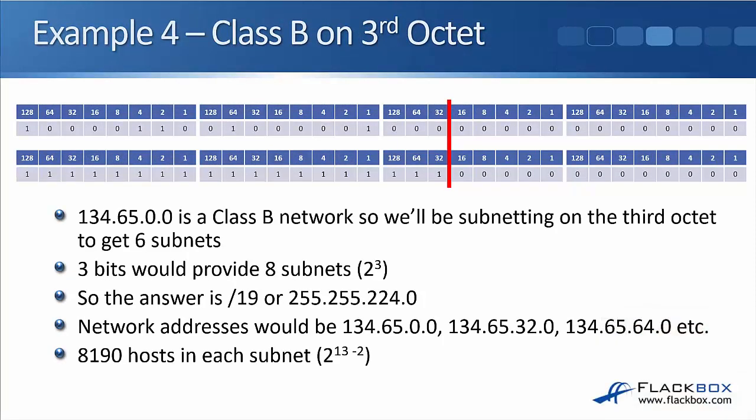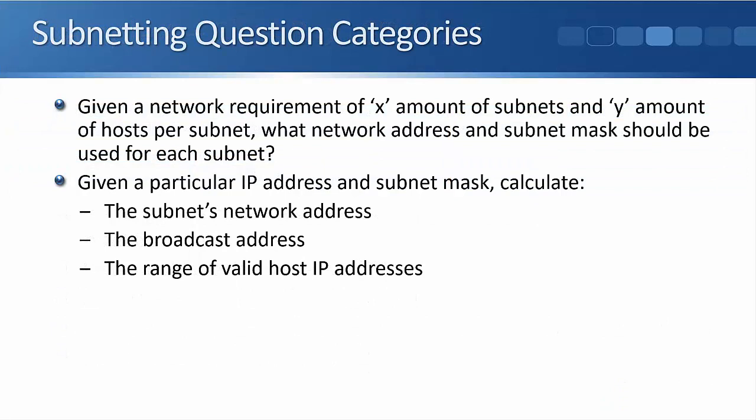Some extra information that we weren't actually asked for in the question: a slash 19 in dotted decimal is 255.255.224.0. The network addresses would be going up in blocks of 32 — so 134.65.0.0, the next one 134.65.32.0, and so on.